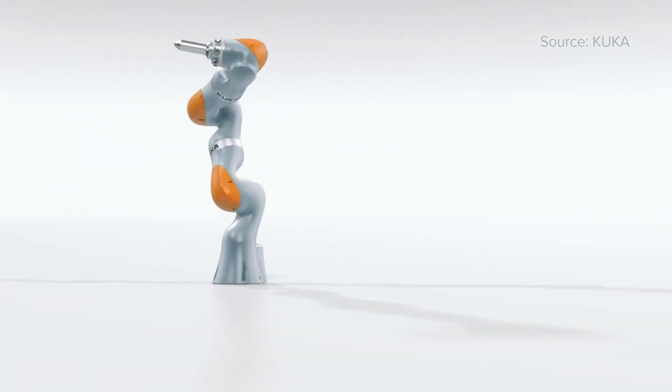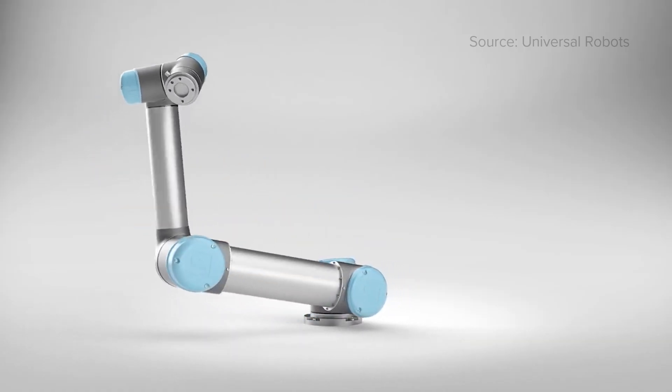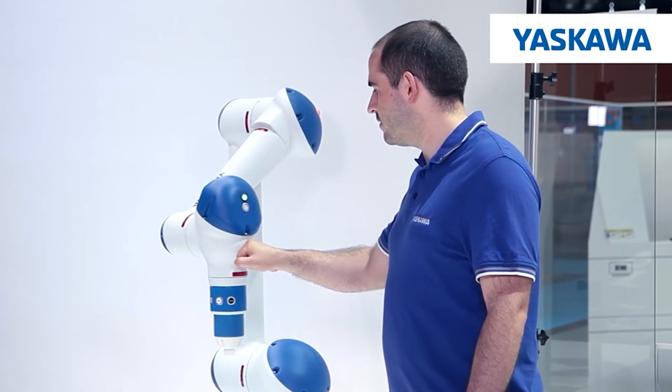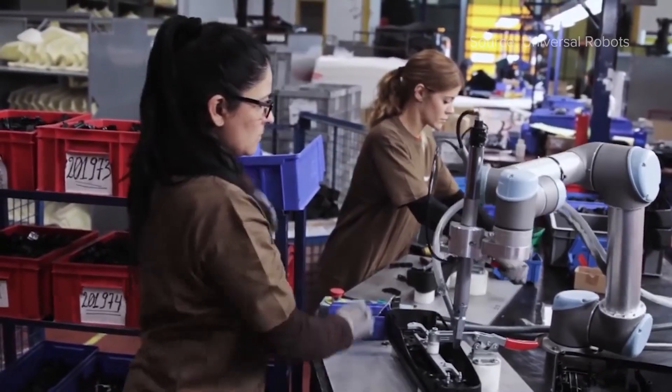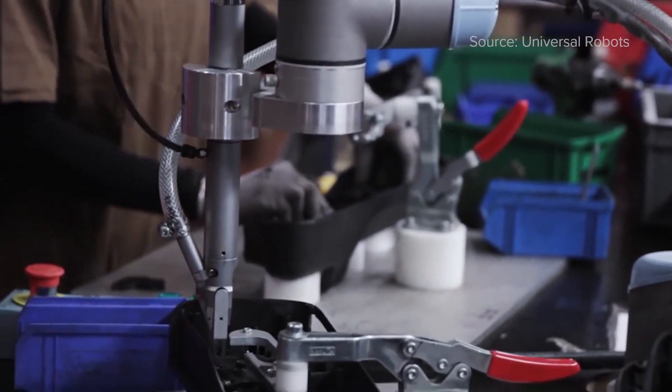Collaborative robots, on the other hand, are a new breed of robots that are smaller and safer. They can detect and stop when a collision occurs, so they can be set up right next to workers and collaborate with them side by side.